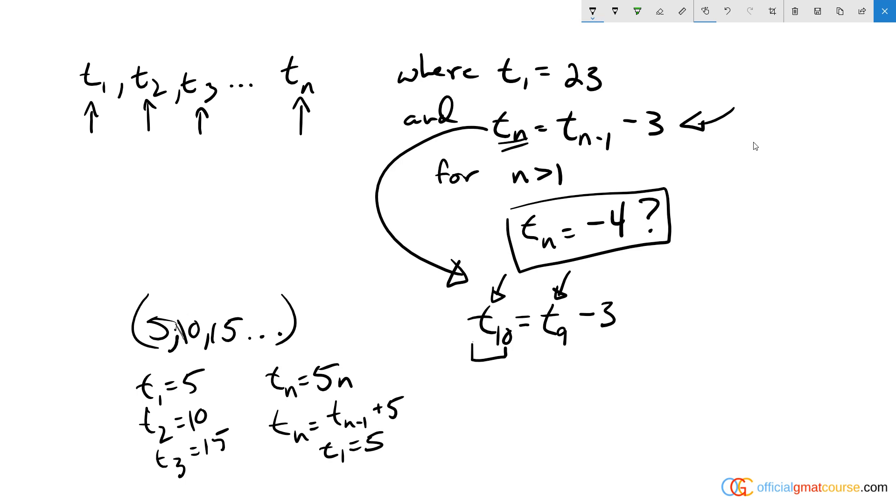So I would know, okay, starting with t sub 1 that's 5, every number is equal to the number before it plus 5. So t sub 2 would be equal to t sub 1, which is equal to 5 plus 5, so t sub 2 would equal 10. That's the idea with sequences. Basically what we're told here is we're going from 23 to 20 to 17.